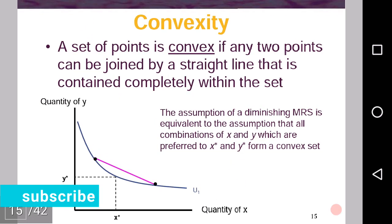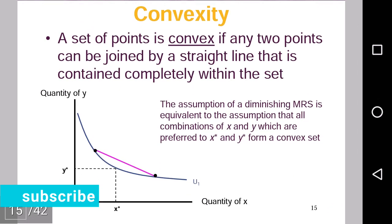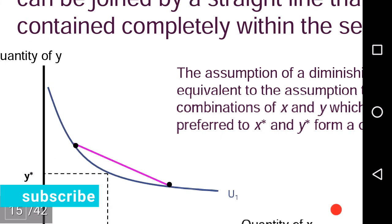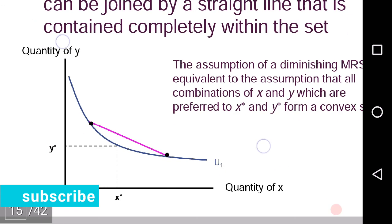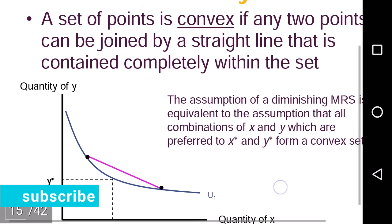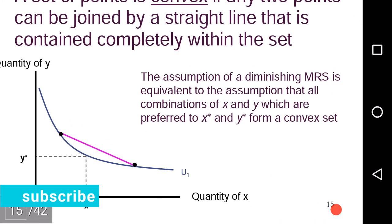Convexity: indifference curves are convex. A set of points is convex if any two points within the set can be joined by a straight line that is contained completely within the set. If we join any two points with a line and that line lies within the set, the set is convex. The assumption of diminishing marginal rate of substitution is equivalent to the assumption that all combinations of x and y which are preferred to x* and y* form a convex set.